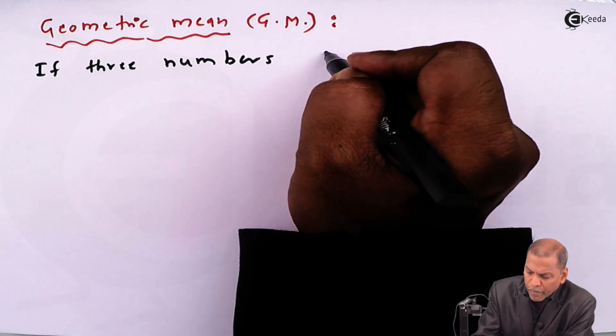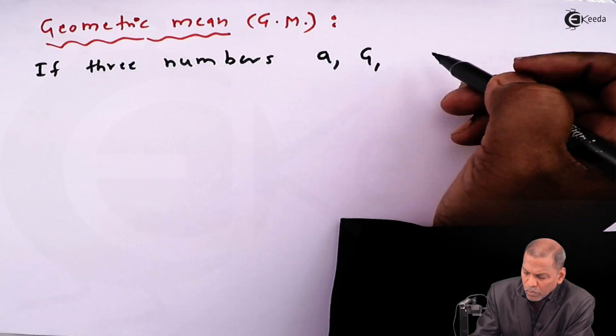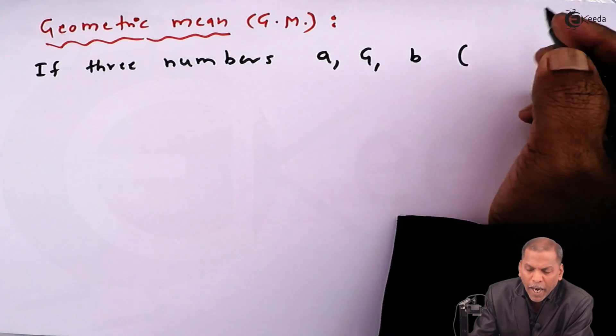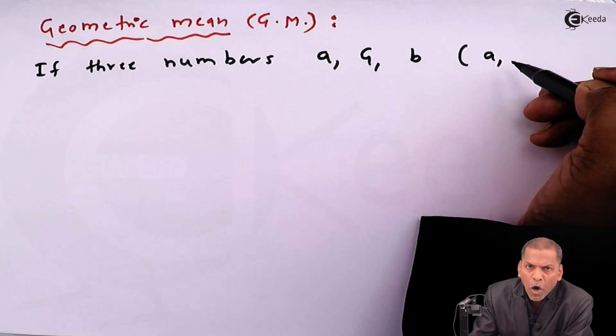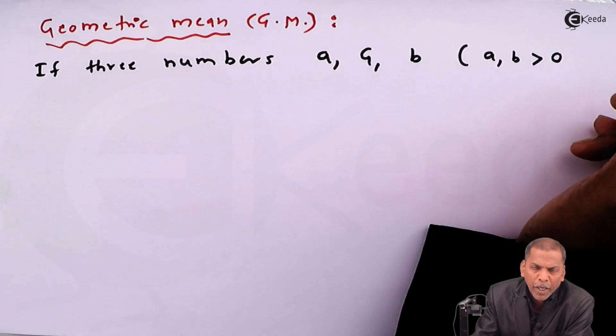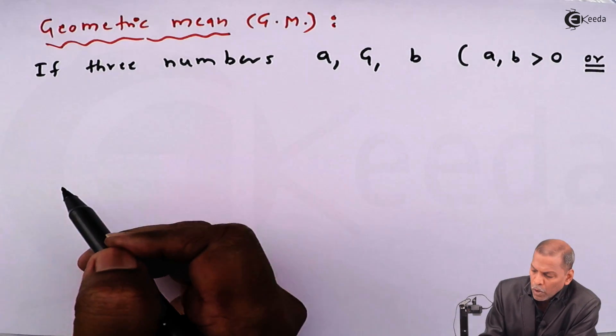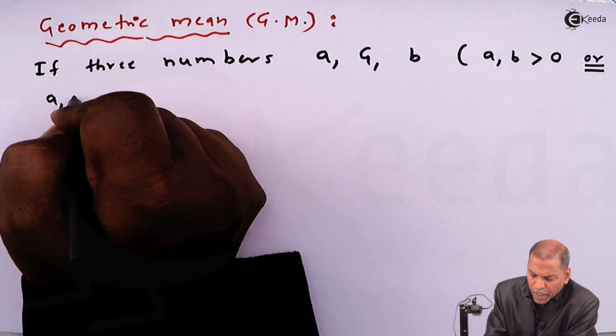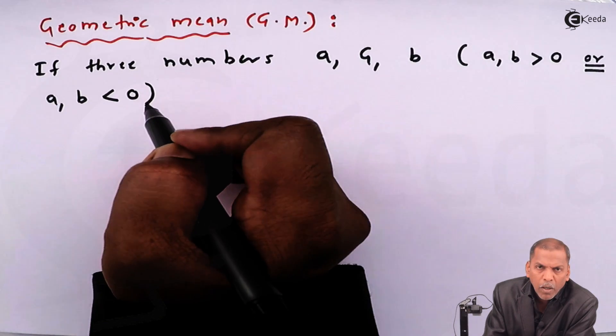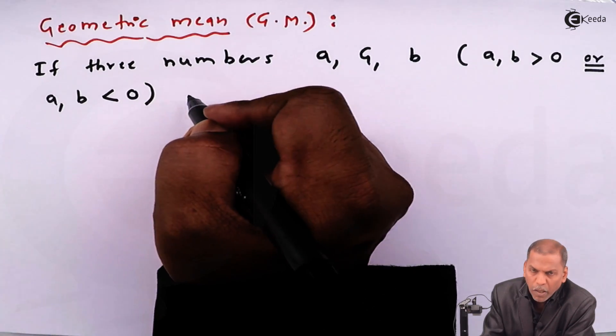If three numbers small a, capital G, and small b (where a, b > 0, meaning both a and b are positive, or both a and b < 0, meaning both are negative numbers)...